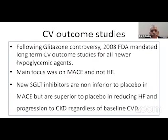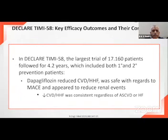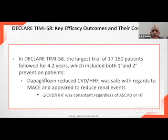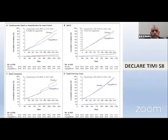Following the glitazone controversy, the FDA mandated that all new diabetic agents undergo cardiovascular outcome trials. With this in mind, SGLT2 inhibitors were initially studied to assess potential cardiovascular harm. The first such study, DECLARE-TIMI 58, published in January 2019, studied 17,160 patients over four and a half years in both primary and secondary prevention settings with atherosclerotic vascular disease. The primary endpoint was major adverse cardiovascular events — death, stroke, and MI. The primary MACE endpoint showed a favorable effect, but it was not statistically significant.